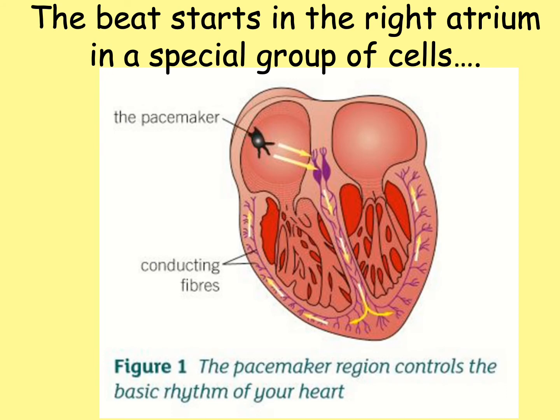The pacemaker region controls the basic rhythm of your heart. The beat starts in the right atrium in a special group of cells — the natural pacemaker. The natural pacemaker regions of the heart are very complex, and doctors and scientists are developing even more complex artificial pacemakers to try to mimic the natural responses of the heart as closely as possible.